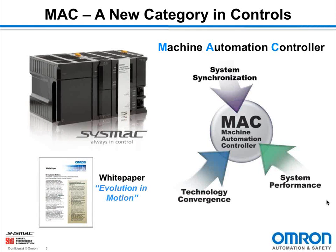You may ask what is a MAC — it's a new concept put forward by OMRON, called a Machine Automation Controller. One of the things going on in the world of control today is integration: how can we get all the various disciplines that go into machine control — motion, vision, information — integrated and synchronized better.